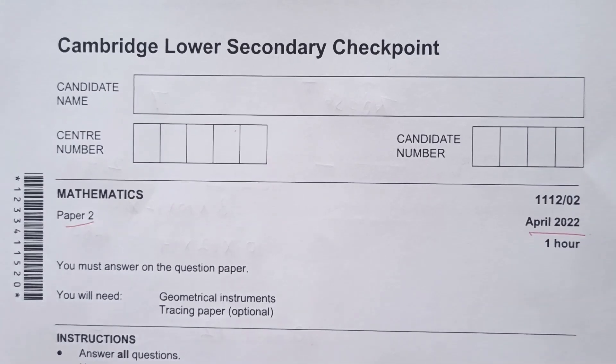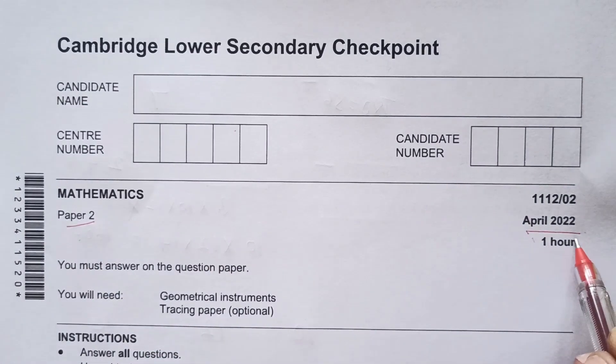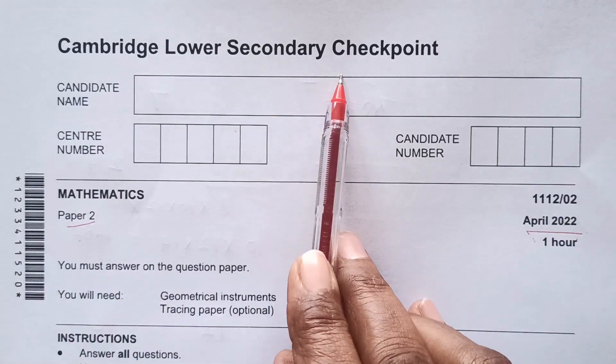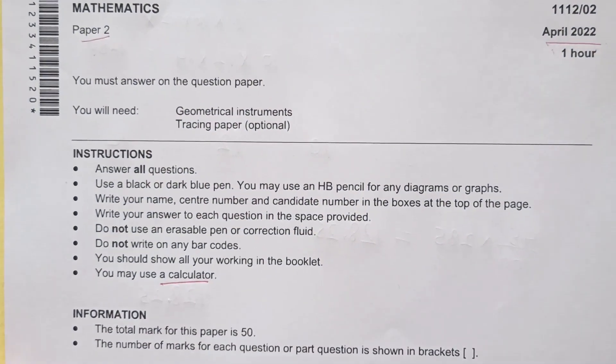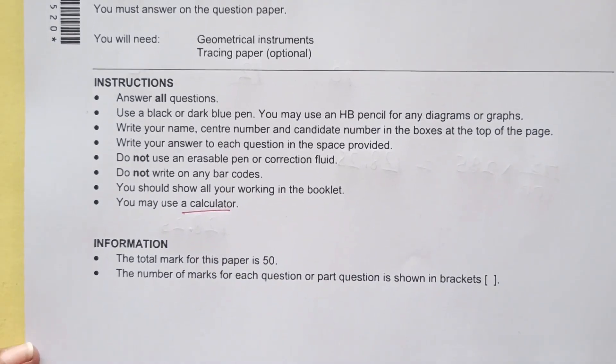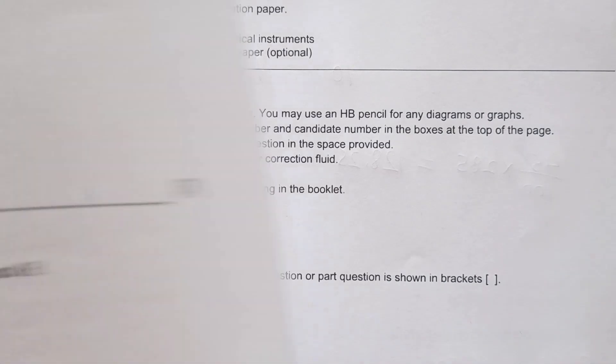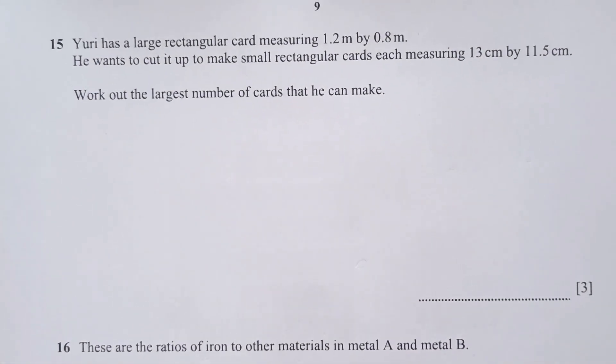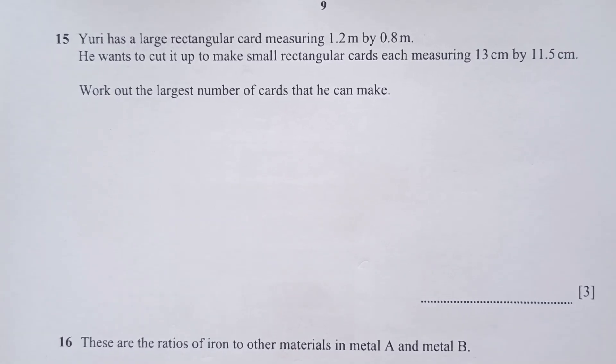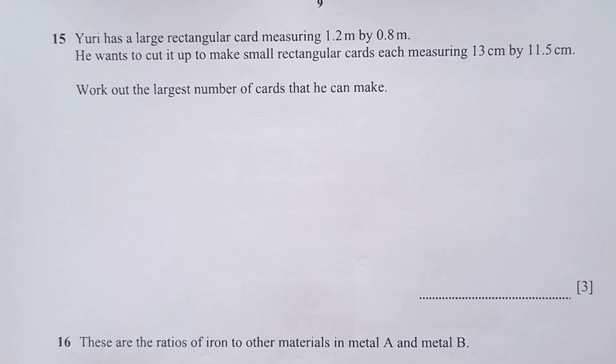Hello everyone, welcome back to my channel. This is the second part of mathematics paper 2 of April 2022 of Cambridge Lower Secondary for year 9. Some countries they do this in year 8. We can use calculator in this paper. In the first video, we covered questions 1 to 14. In this video, we will do the remaining questions.